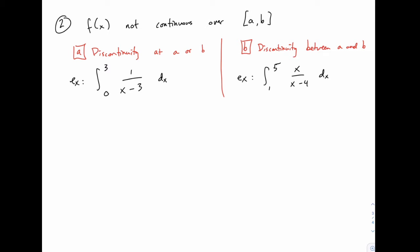Here's the second type of improper interval. The first type were examples where one of the bounds of integration, or both, were infinity. In other words, we were integrating over an infinite interval.